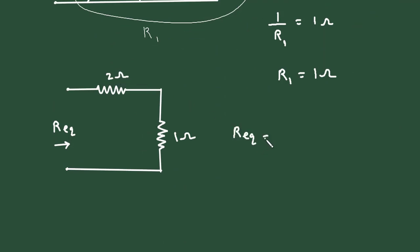So therefore, R equivalent is equal to 2 plus 1. So therefore, R equivalent is equal to 3 ohm. So this is how we can find equivalent resistance.